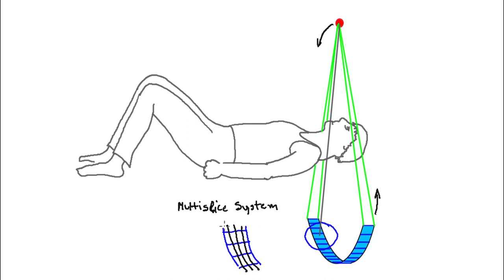These are called multi-slice systems. There's more than one slice in the detector bank, so you get the whole image at once — the advantage being you get larger volumes faster. The width of the detector can vary in different systems: you could have four slices, eight, sixteen, and so on, or even 128, and some are even larger now.